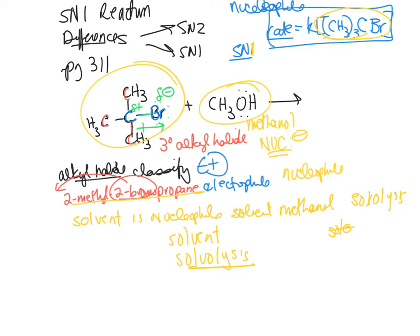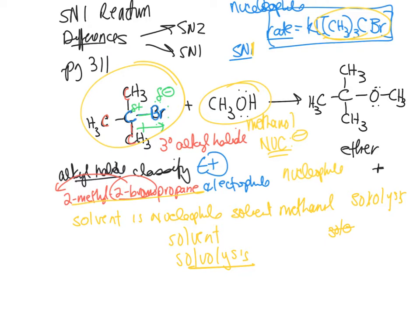The substitution product would be an ether, and you'd also get HBr. The H comes from the methanol and the Br came from your tertiary alkyl halide. This is an ether because you have an oxygen bonded to two carbons on either side. So we converted an alkyl halide into an ether — this is an SN1 reaction.